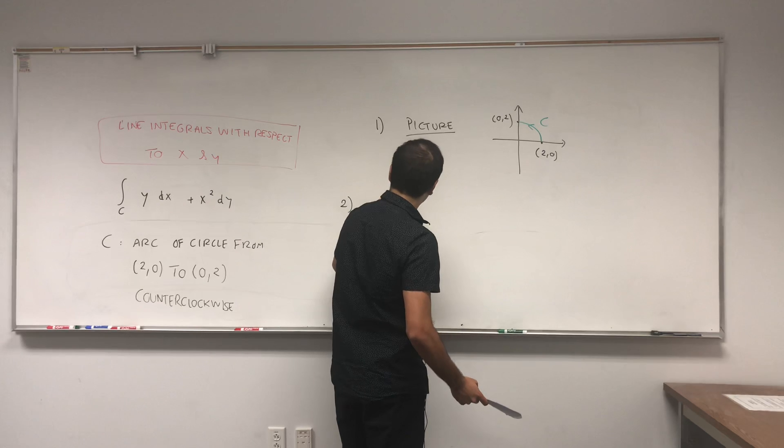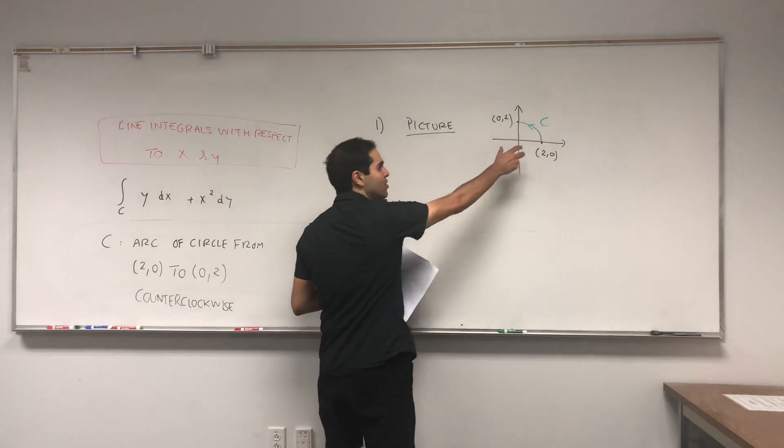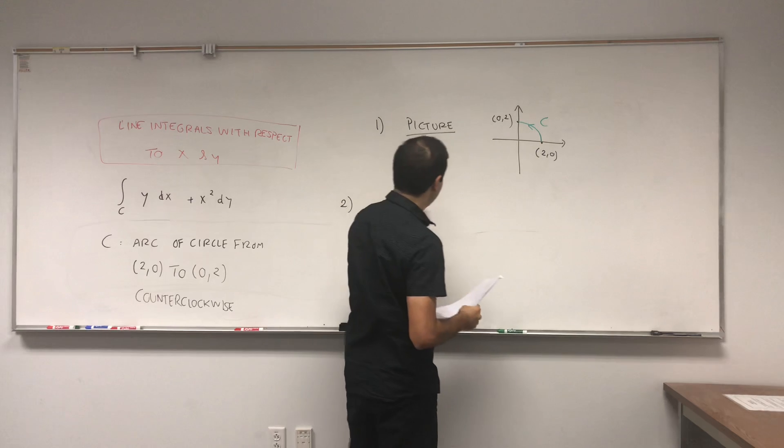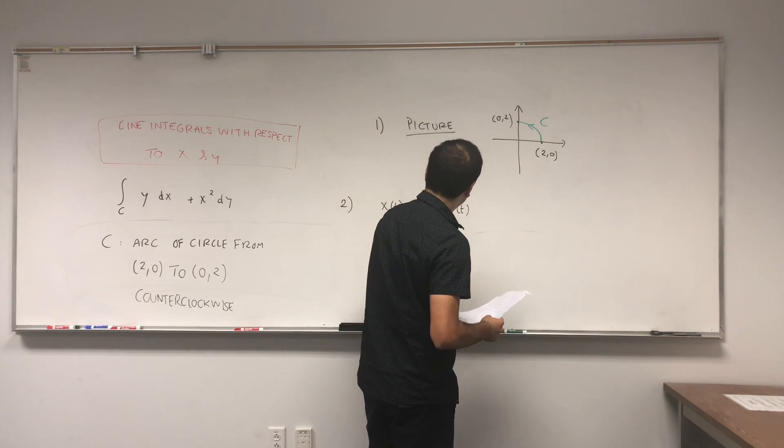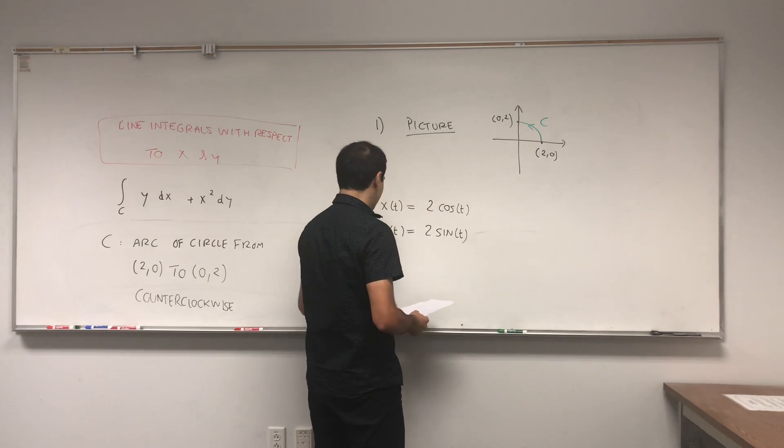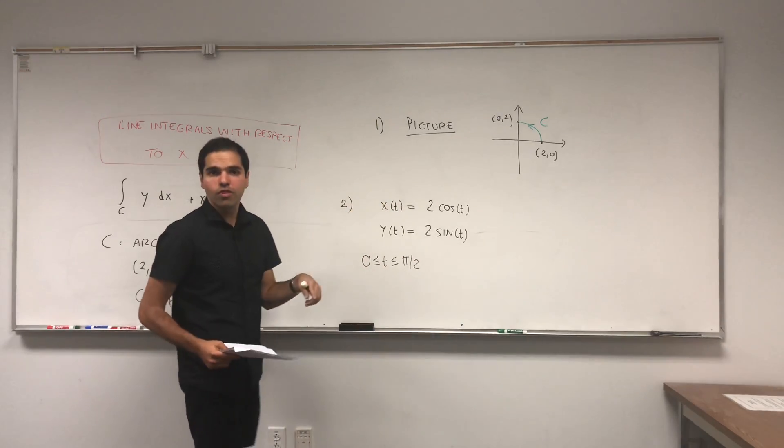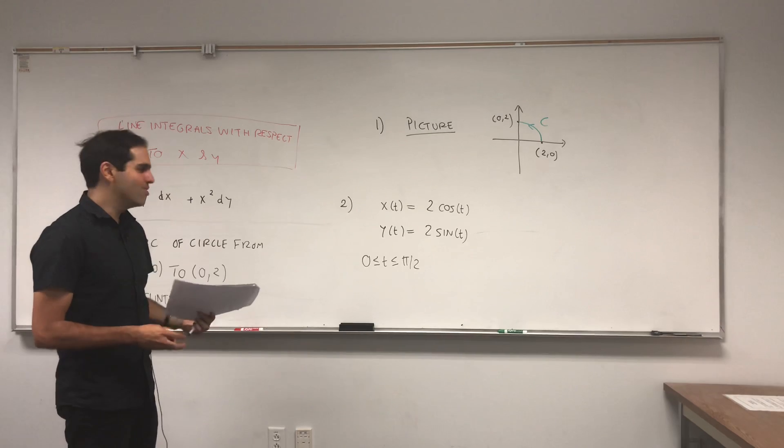So here, thinking in terms of polar coordinates, if you have a circle radius 2, the parametrization becomes 2 cosine t and 2 sine t, and t goes from 0 to pi over 2. That's because we have a circle, and that's because we have a quarter of a circle. If it were the full circle it would be from 0 to 2 pi.